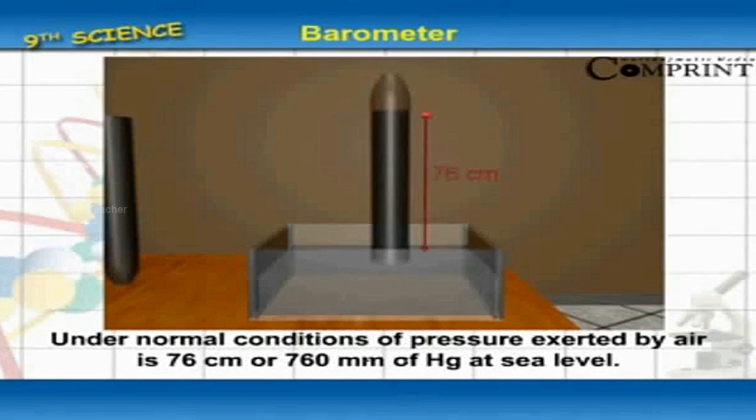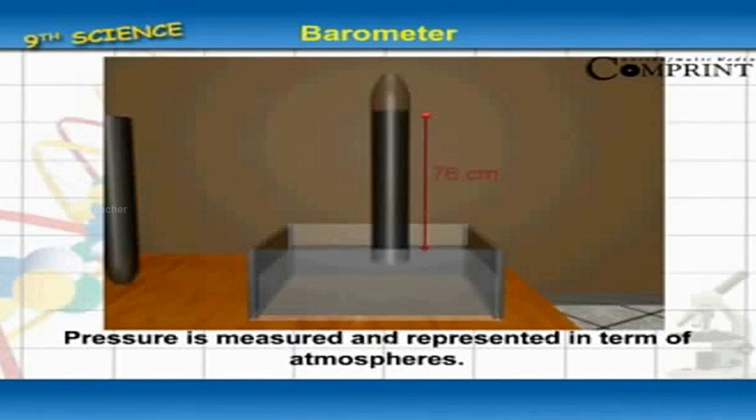Under normal conditions, pressure exerted by air is 76 cm or 760 mm of Hg at sea level. Pressure is measured and represented in terms of atmospheres.